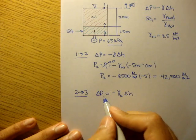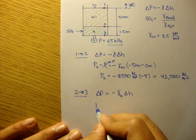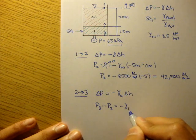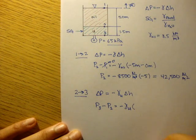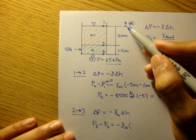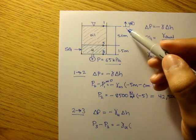So pressure of three minus pressure of two equals negative gamma of the unknown liquid times the change in height. Just to be safe, let's keep our datum up here.